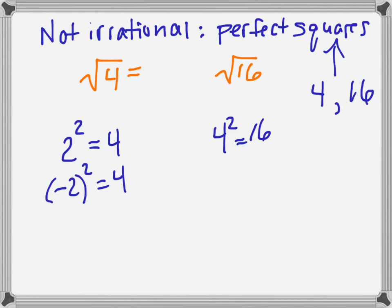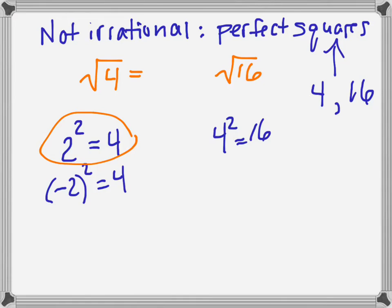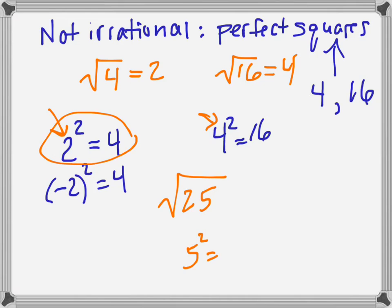A quick refresher on how to do that. The square root of 4 — we're asking what number squared or times itself equals 4. Because I can rewrite the 4 as 2 squared, I know that the square root of 4 is equal to 2. It's just whatever number is being squared to get the number inside the square root sign. The square root of 16 is 4 because 4 is the number that times itself gives me 16. And the square root of 25 — since 5 squared is 25, the square root of 25 is 5.